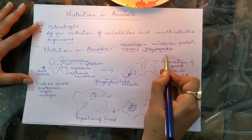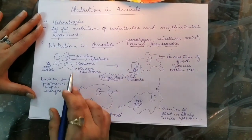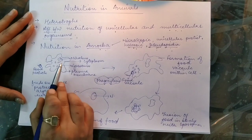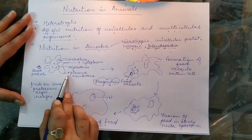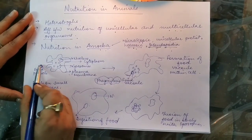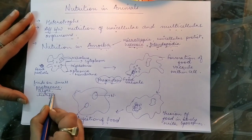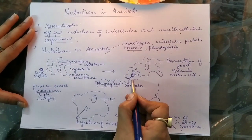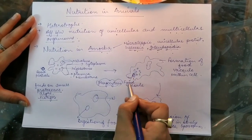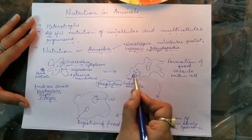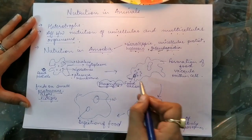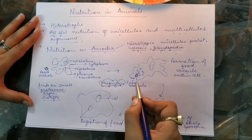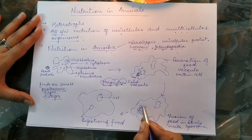Pseudo means false, podia means feet. With the help of this diagram you will be able to understand how amoeba obtains and digests food. Amoeba has an irregular structure with a nucleus, cytoplasm, cell organelles like lysosomes, and a plasma membrane. When a food particle such as a small protozoan or algae comes near the body of amoeba, the amoeba forms two pseudopodia which engulf the food particle into the cell membrane through phagocytosis. When the two pseudopodia meet, they form a structure called a food vacuole.